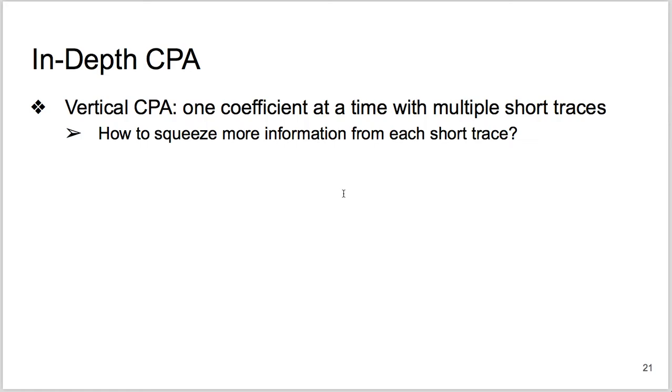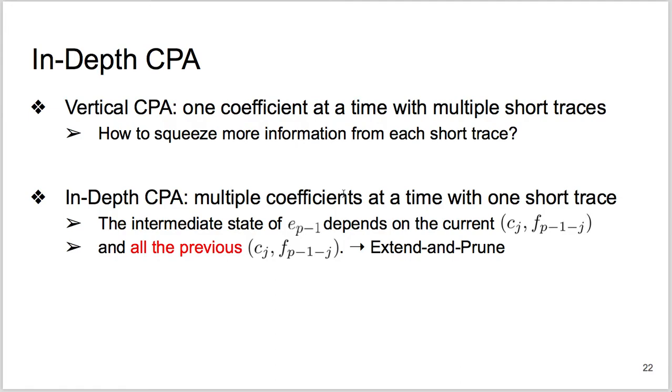In Vertical CPA, we compute the ideal power sample sequence from the same intermediate variable across different inputs, and then we compare it with its real-world counterpart at the same timing across different executions. So can we squeeze more information from each short trace? The answer is yes. In In-depth CPA, we compute the ideal power sample sequence from different intermediate variables from one single input. Now its real-world counterpart is from different timings in one single execution. In both scenarios, one timing one intermediate variable and one intermediate variable seemingly one private key coefficient to recover. So why would the in-depth CPA make a difference? Each intermediate state of the middle output coefficient depends on both the current input coefficient pair and all the previously loaded input coefficient pairs. So one intermediate state helps more than reveal one new private key coefficient. It can meanwhile verify the correctness of all the previously revealed private key coefficients. To exploit this dependence, we use the Extend and Improve framework.